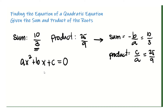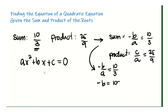Now with these two equations, what you will need to do is to solve b and c in terms of a. So let's start with the first one: negative b over a is 10 over 3. That means negative b is 10a over 3, which means b is negative 10a over 3. If you do the same for the second equation from the product, c — multiply both sides by a — you have 25a over 9.